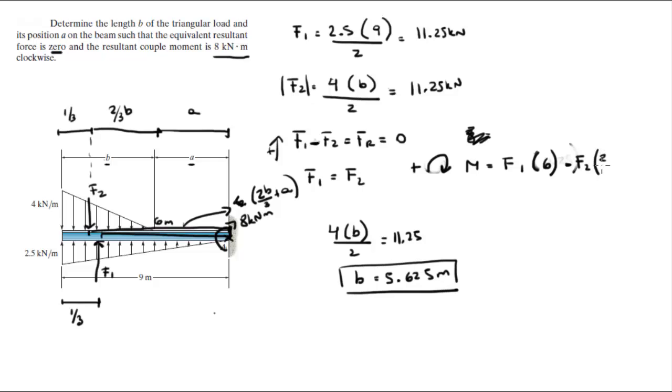You know that the moment is equal to 8. You know that this comes out to be 67.5 because we got F1 already, minus 11.25. We got B, so this fraction right here comes out to be 3.75 plus A. So when you solve for A, you get that A is equal to 1.54 meters.